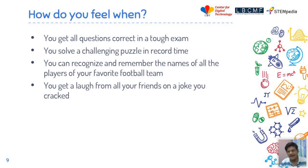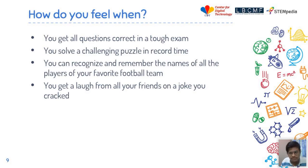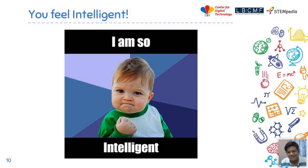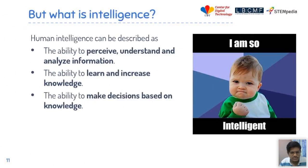I can see responses: proud, amazing, happier than ever, very very happy, fabulous, wonderful. One of the major feelings is also that we feel intelligent. So if I correct all the questions in a tough exam or solve a challenging puzzle in record time, I feel very intelligent. Now let's understand what exactly intelligence is. To understand human intelligence, there are three steps: we perceive, understand and analyze information; learn and increase knowledge; and make decisions based on that knowledge.